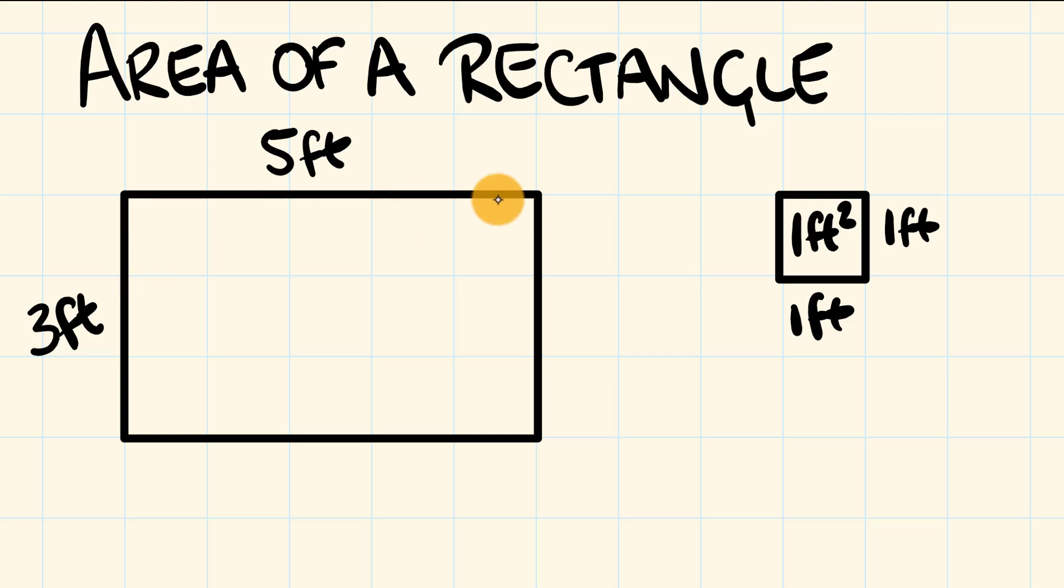Here we have a rectangle with a length of five feet and a width of three feet. We measure area in units such as square feet, where we have a square which has sides of one foot by one foot, as you can see here, that gives us an area of one square foot.